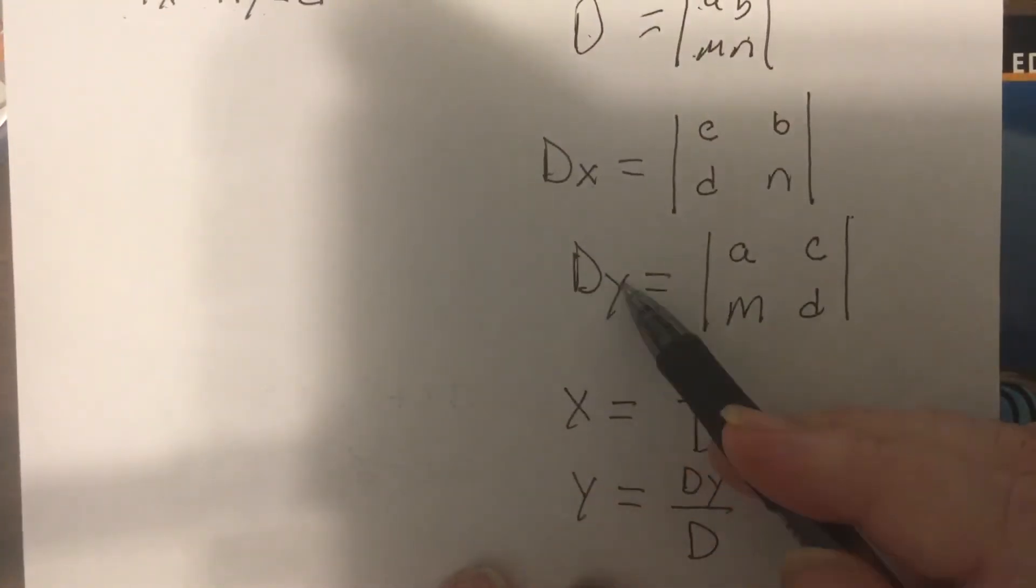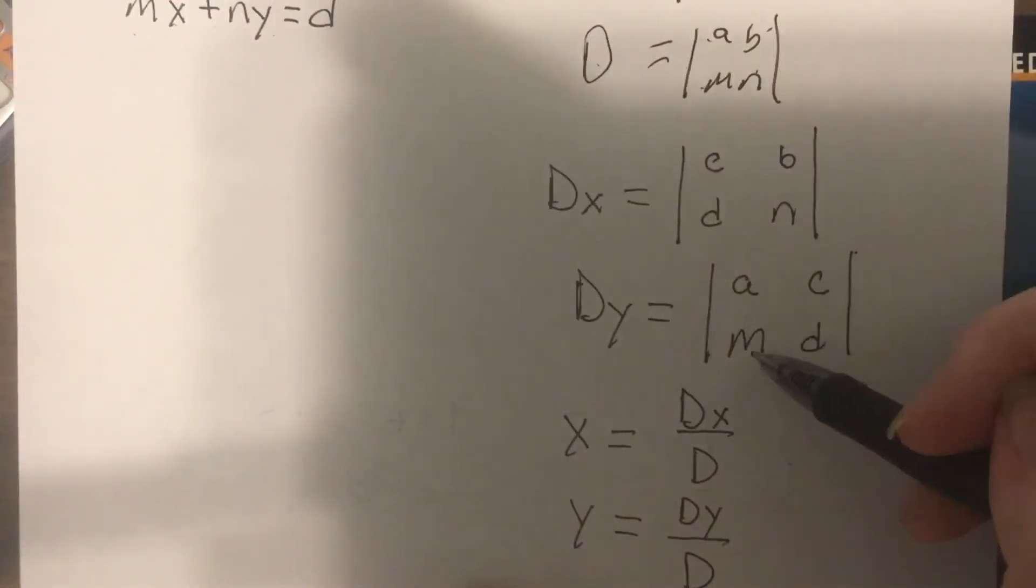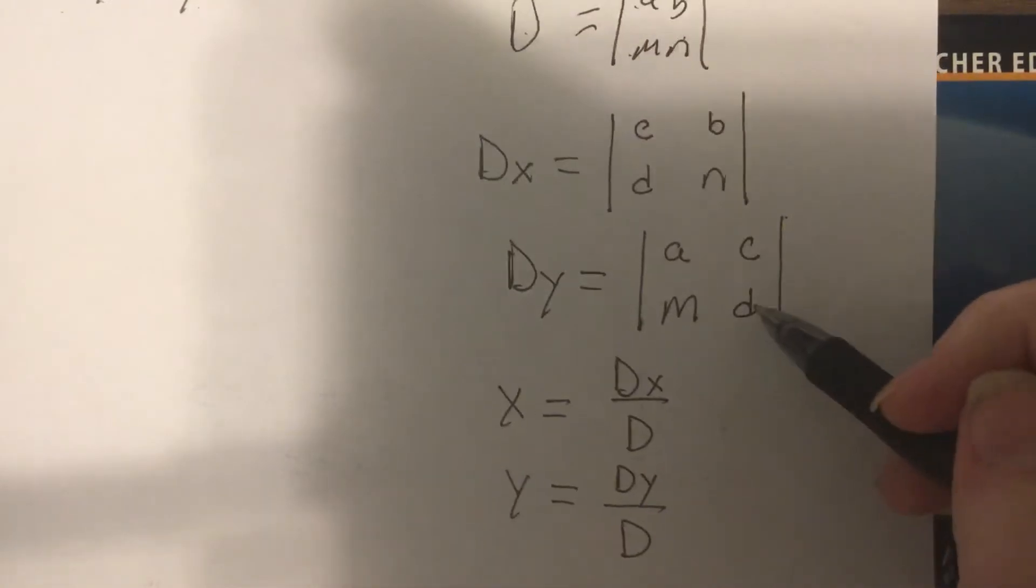Then you have DY, which is you leave the X coefficients alone, and you put in the constants for the Y coefficients.